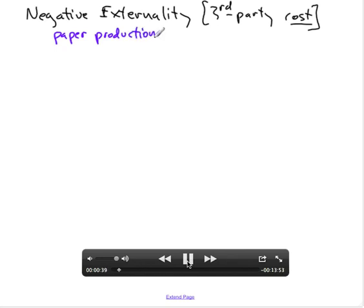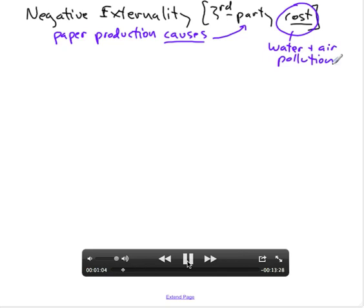Notice right away, paper is not a negative externality. Basically, paper production causes a third-party cost. The cost itself is pollution, water and air pollution. So keep that clear in your mind. Paper is not a negative externality. Paper is a good that people use a lot of. The negative externality caused by the production of paper is pollution.